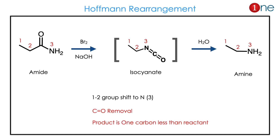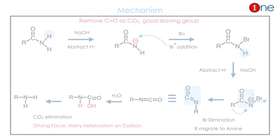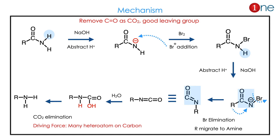What is Hofmann rearrangement? It is a conversion of amide into amine. Basically the alkyl group moves towards nitrogen with the loss of CO2. Here you can see a 1-to-2 group shift to nitrogen, and the product will be one carbon less than the reactant.